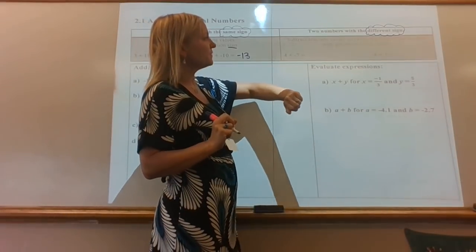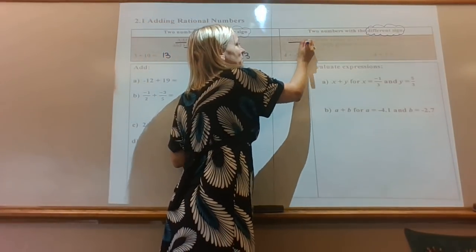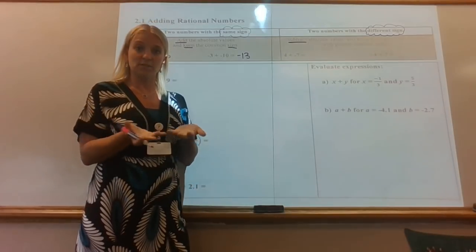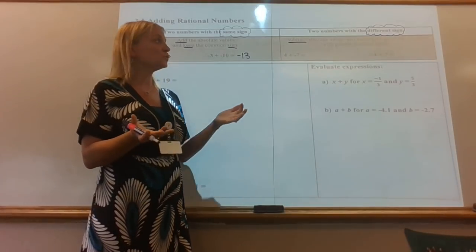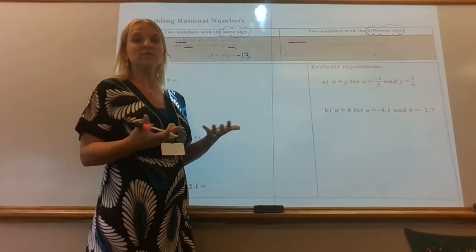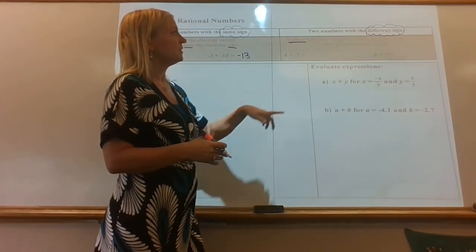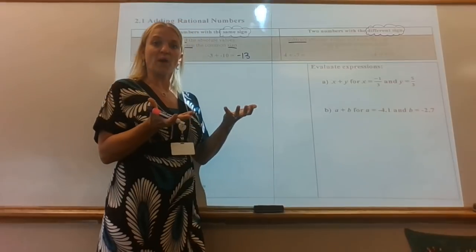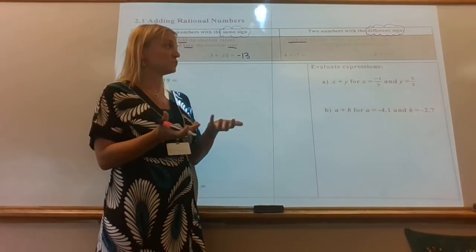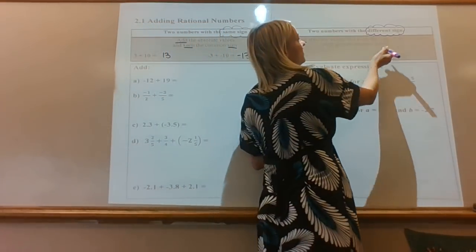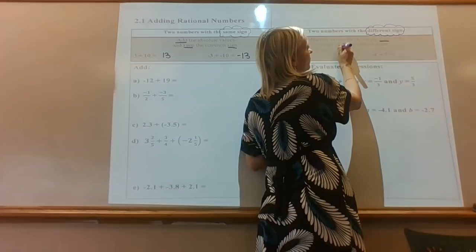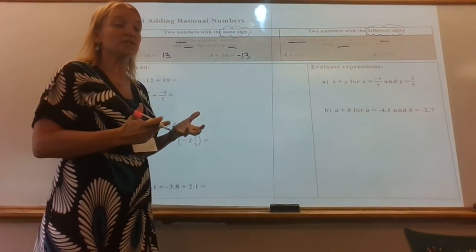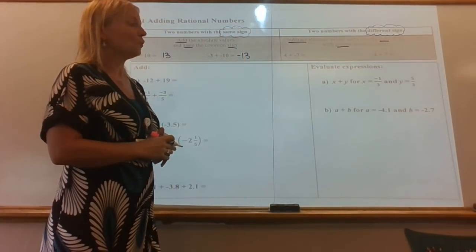When they are different signs, you actually subtract them. That's because positives and negatives are opposites — they cancel each other out. So we don't add a positive and negative together; we subtract them from one another. Subtract the absolute values, meaning just look at the numbers without the signs and subtract them. Then give it the sign of whichever number has a greater absolute value — whichever number is larger without the sign.